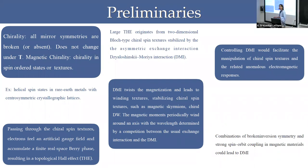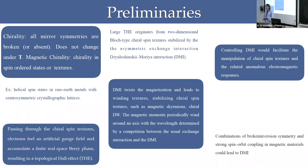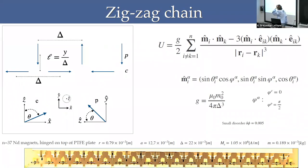The strategy up to now has been to combine broken inversion symmetry with a strong spin-orbit interaction. In magnetic systems in particular, what you do is sandwich or couple two magnetic layers through a metallic layer in order to create this spin-orbit interaction. The approach we propose is a very simple system: it consists of a zigzag chain.